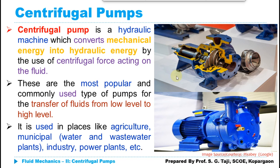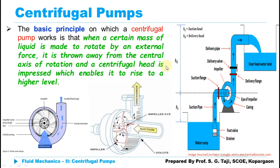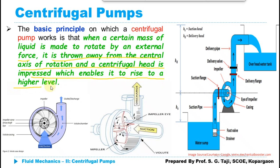The working of the centrifugal pump is based on the principle of forced vortex flow, which states that when a certain mass of liquid is made to rotate by an external force, it is thrown away from the central axis of rotation and a centrifugal head is impressed, which enables it to rise to a higher level.